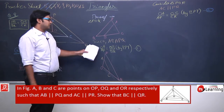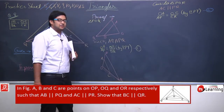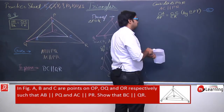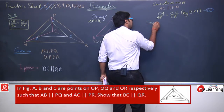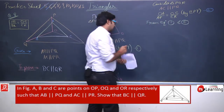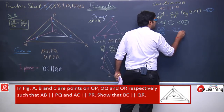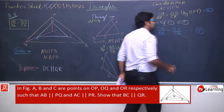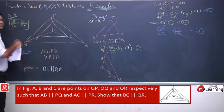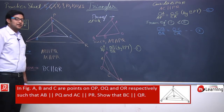Now observe equation 1 and equation 2. Both have the same LHS, that is OA/AP. Since the LHS is the same in both equations, we can equate them. From equations 1 and 2, we conclude that OB/BQ = OC/CR. This is exactly what we needed to prove, so we can now use the converse of BPT.